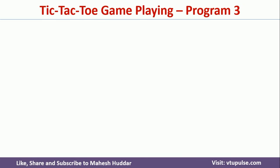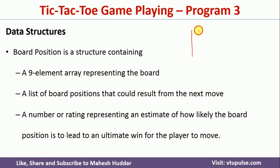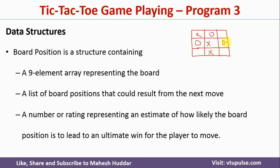Now I will go with the third approach. To solve the tic-tac-toe game with the third approach, we need a data structure of a nine-element array representing the current board position. So when we have this particular current board position — a 3 by 3 grid — with X and O placed at various positions, from this current board position we need to store the list of board positions that could result from the next move.